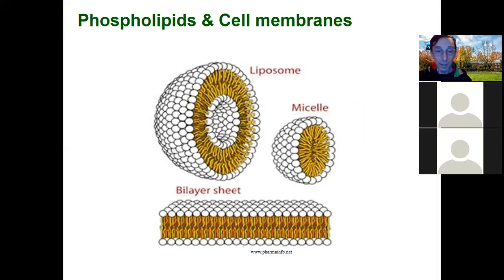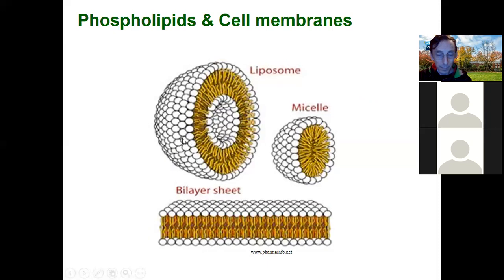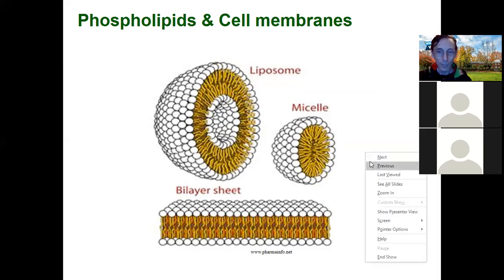When you put phospholipids in water they will start to form a bilayer, because the fatty acid portion wants to be away from the water. The phospholipids keep coming together in that orientation until they form a closed shape — the fatty acid portions are on the inside, and water is on the outside and possibly inside as well.